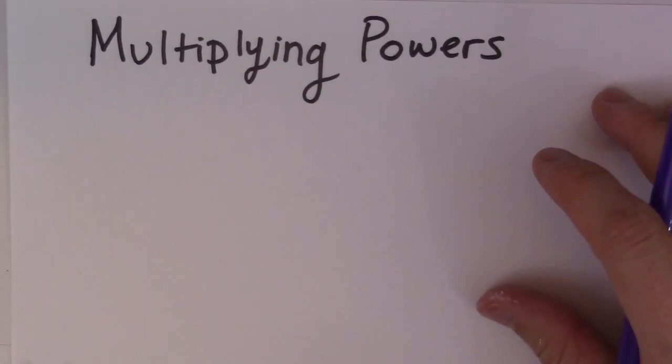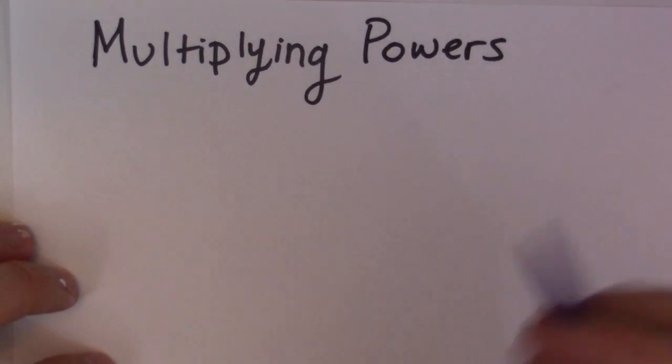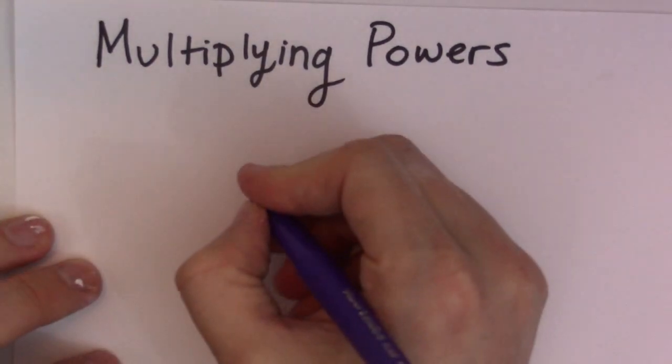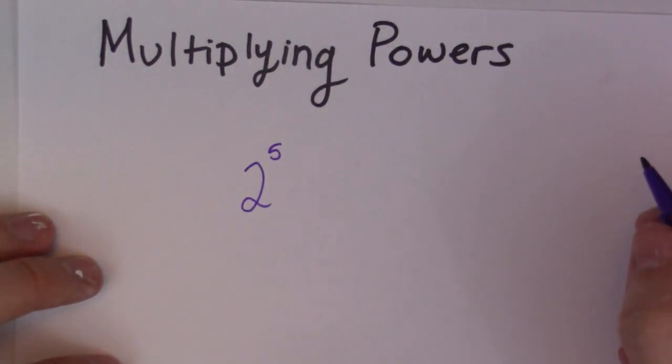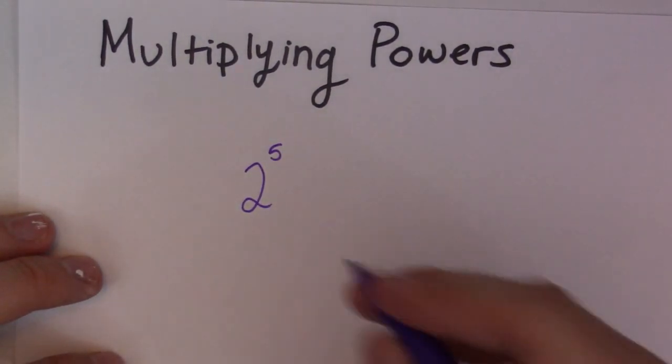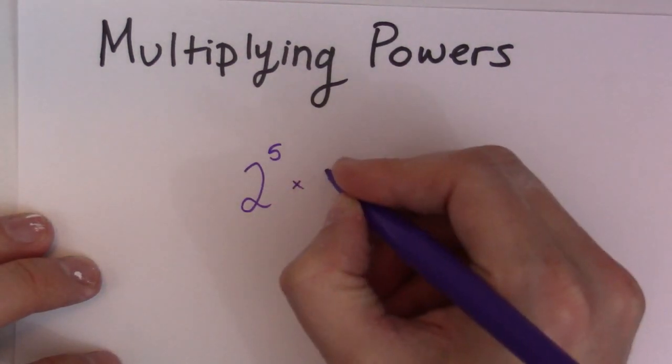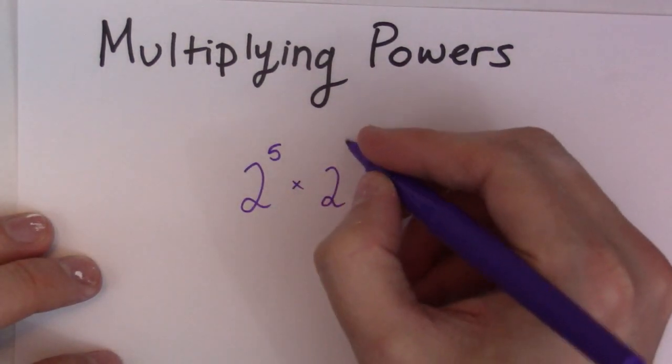So, a power is a number with an exponent. Let me give you an example. 2 to the 5. Exciting times. Now, if I multiply that by another 2 to the 5,